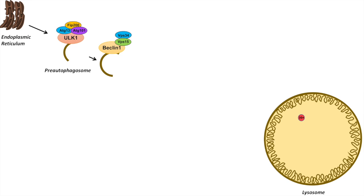As the preautophagosome becomes larger and more elongated, another protein complex gets involved: VPS34, VPS15, and Beclin-1. ULK1 activates Beclin-1 through phosphorylation. This VPS34/VPS15/Beclin-1 complex acts as a class III PI3-kinase and produces PIP3 (phosphoinositol triphosphate) from PIP2 (phosphoinositol diphosphate). The increasing concentration of PIP3 leads to the recruitment of WIPI proteins to the preautophagosomal membrane.